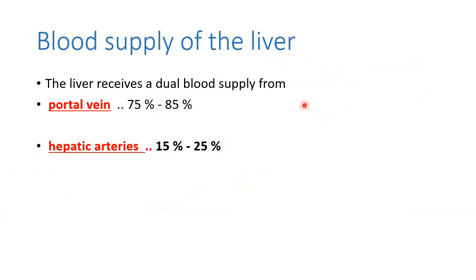The liver receives a dual blood supply: from the portal vein, comprising 75 to 85 percent, and from the hepatic artery, comprising 15 to 25 percent.